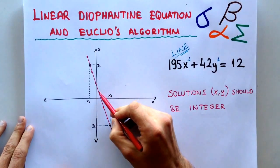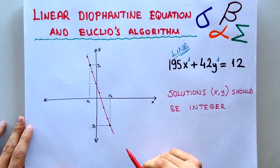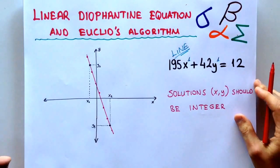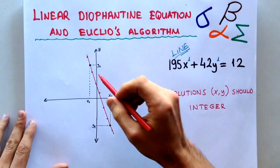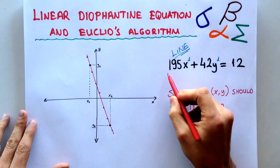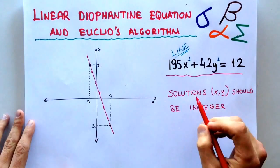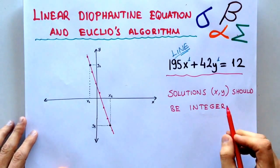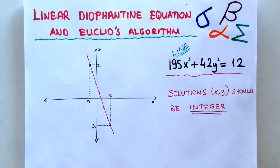We have to know that there are infinitely many solutions for this line. But Diophantine, which is a Greek ancient philosopher, he proposed that there are some integer solutions for this equation. For this equation, there are some integer solutions, and we have to know how to find them out. We have to know something like the solution should be integer.